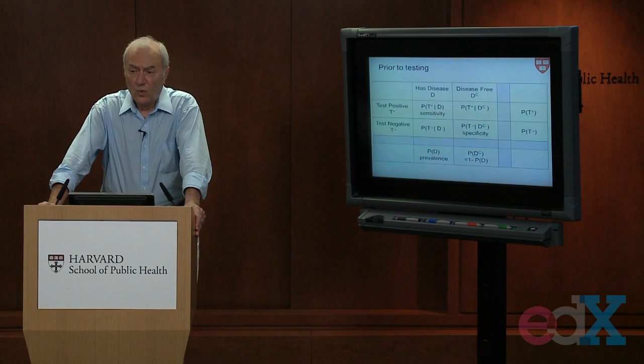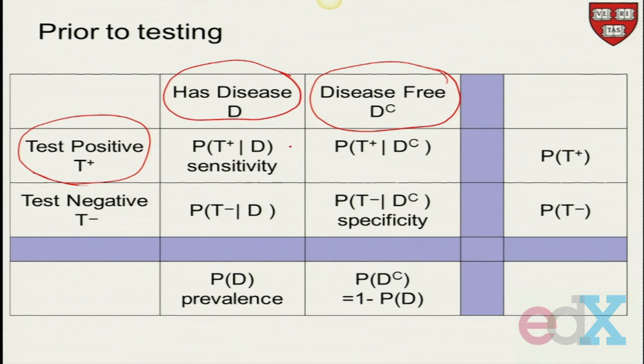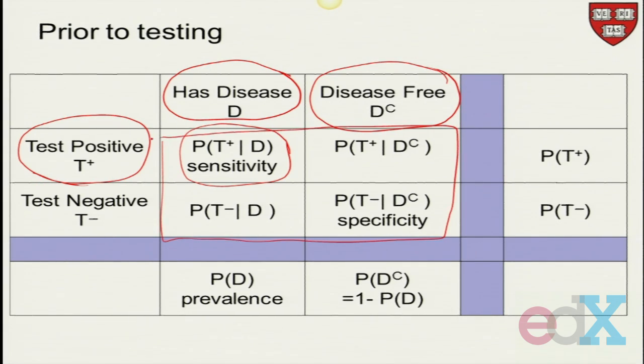So what we've got prior to testing, we have that everybody either has the disease or is disease-free. And you might ask, what about testing positive? What's the probability of testing positive when you have the disease? So I'm making this little two-by-two table for you. And the answer is, that is what we call the sensitivity. So the sensitivity of a test is how often does it test positive when a person has the disease?